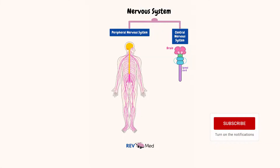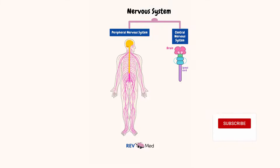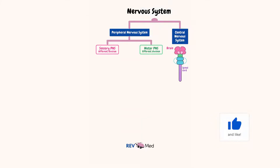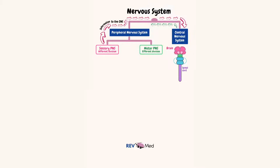Then we see here the rest of the body — the peripheral nervous system, PNS. The PNS is divided into two parts: the sensory part and the motor part. Sensory info from the periphery will flow in this way and go towards the CNS, and the motor response will go this way to the periphery, into the motor part of the PNS.